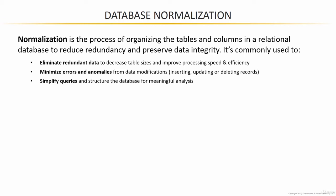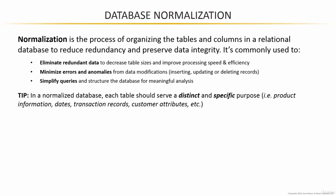My tip to remember what normalization is all about is to think of it this way: in a properly normalized database, every table should serve a distinct and specific purpose. So you might have one table that only gives you information about products, another that only gives you information about dates like a calendar table, one that's only daily transactional records, and another that's only about customers. This should sound pretty familiar because these are the exact type of tables we're using in this AdventureWorks demo.